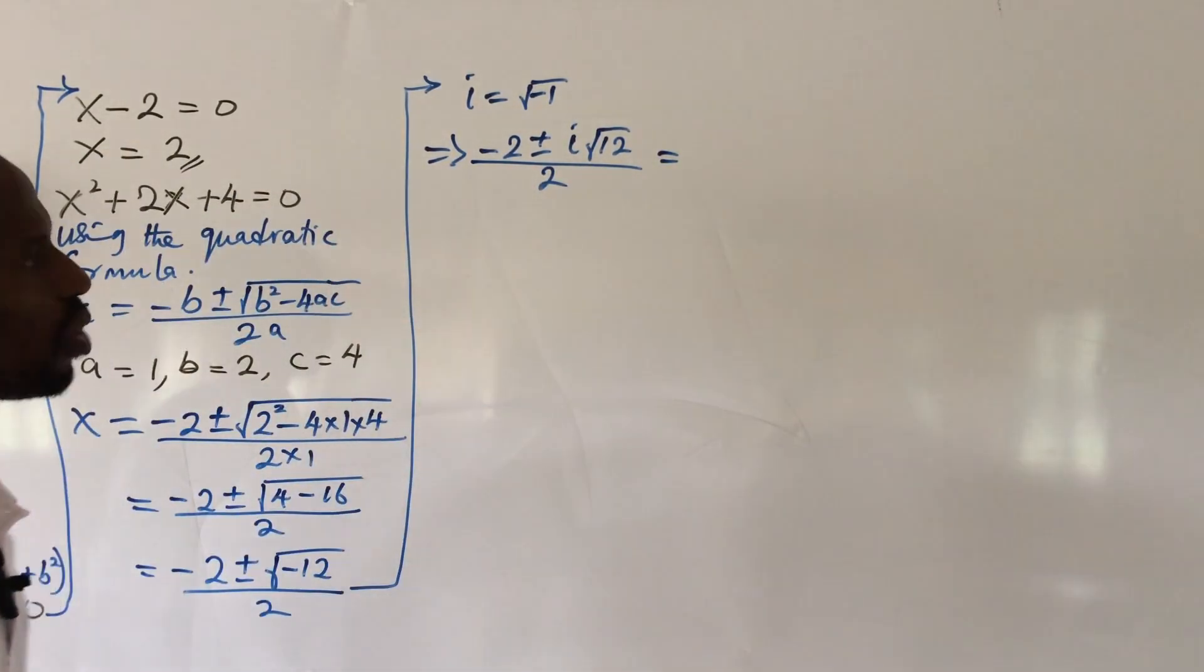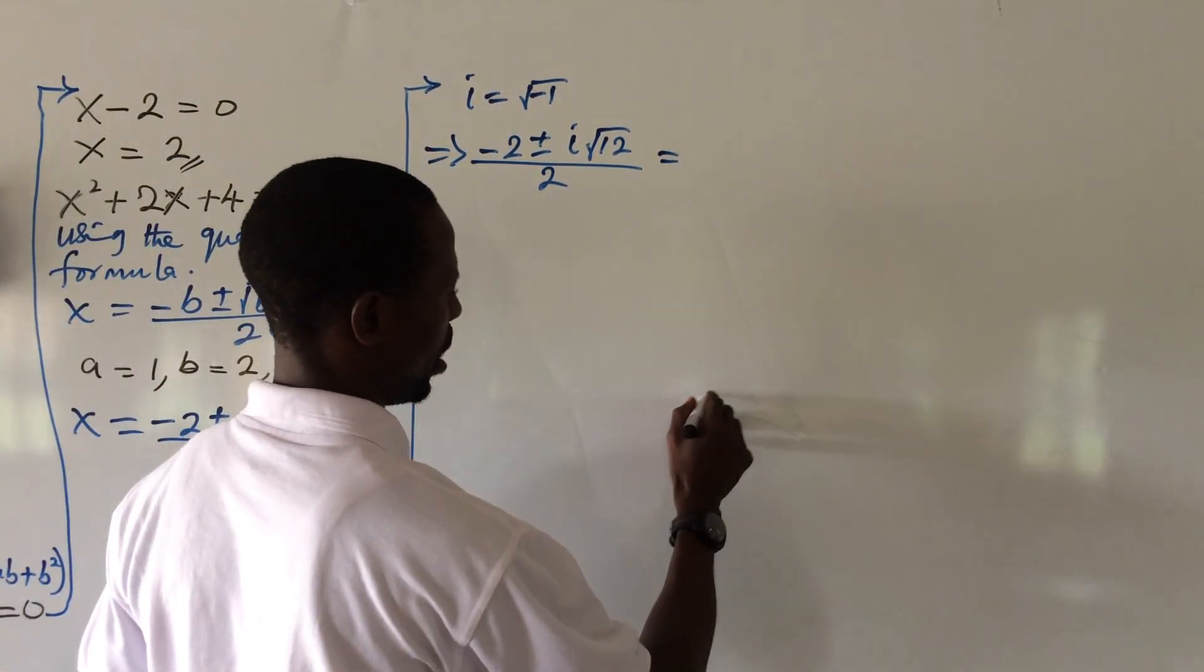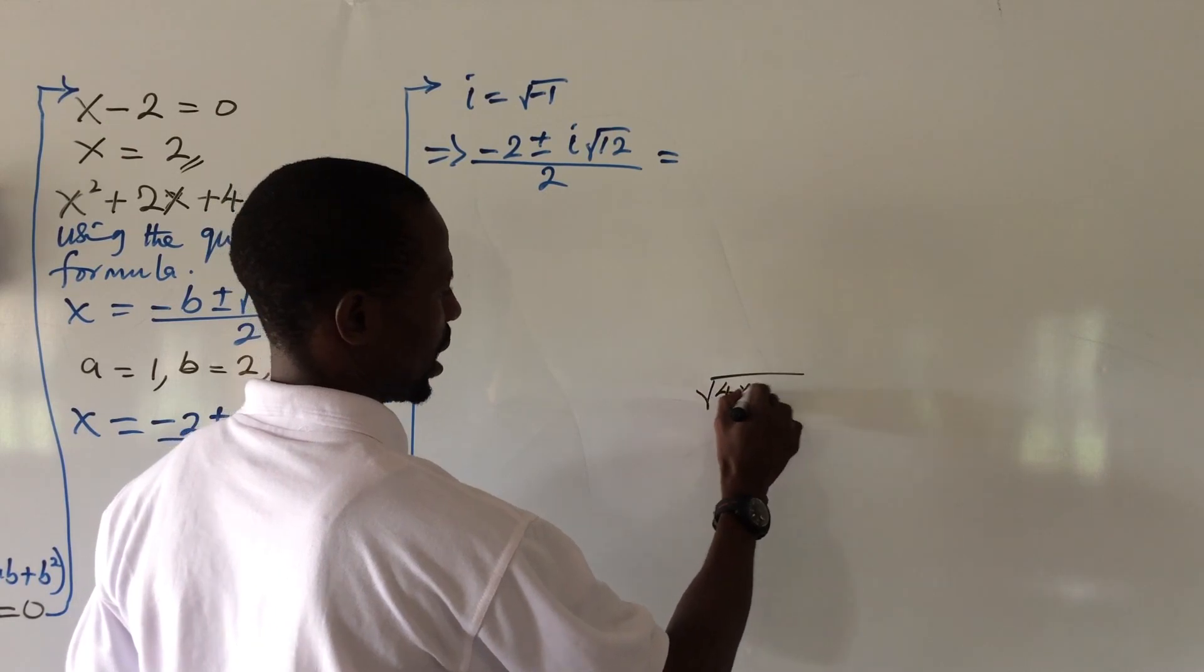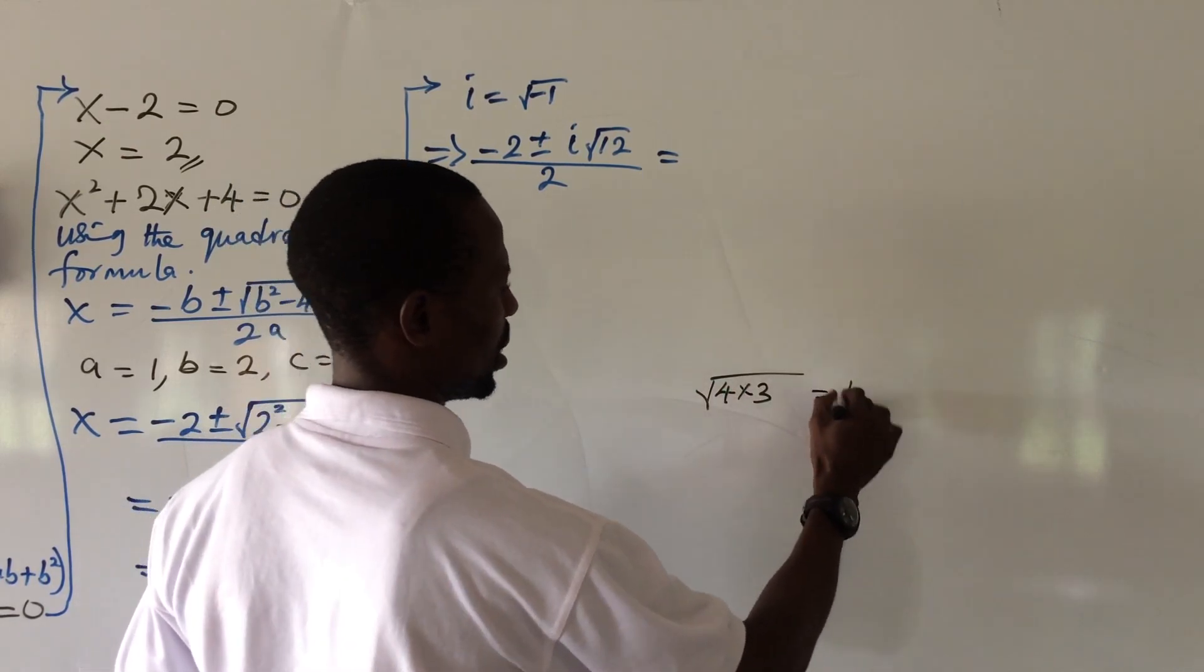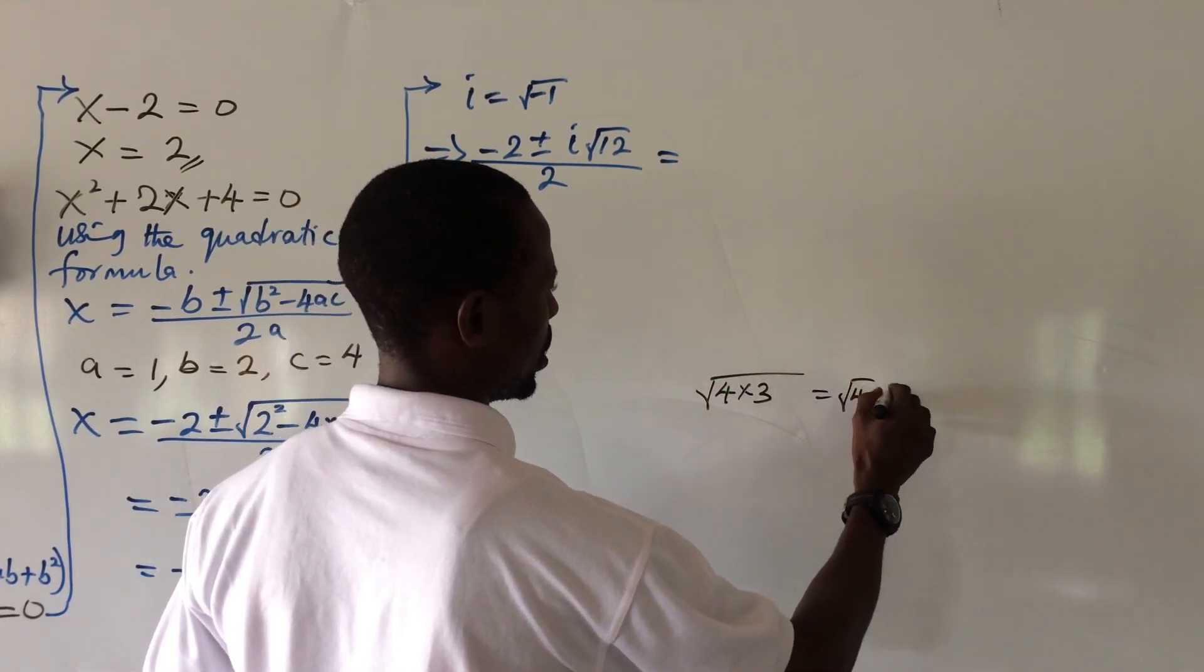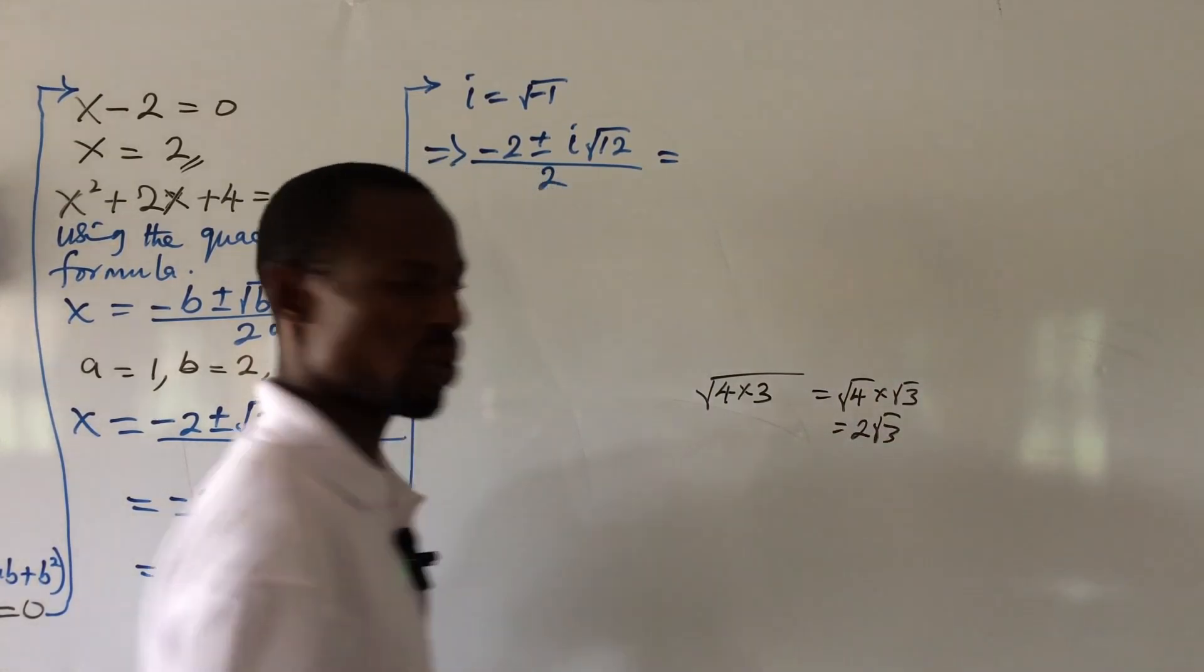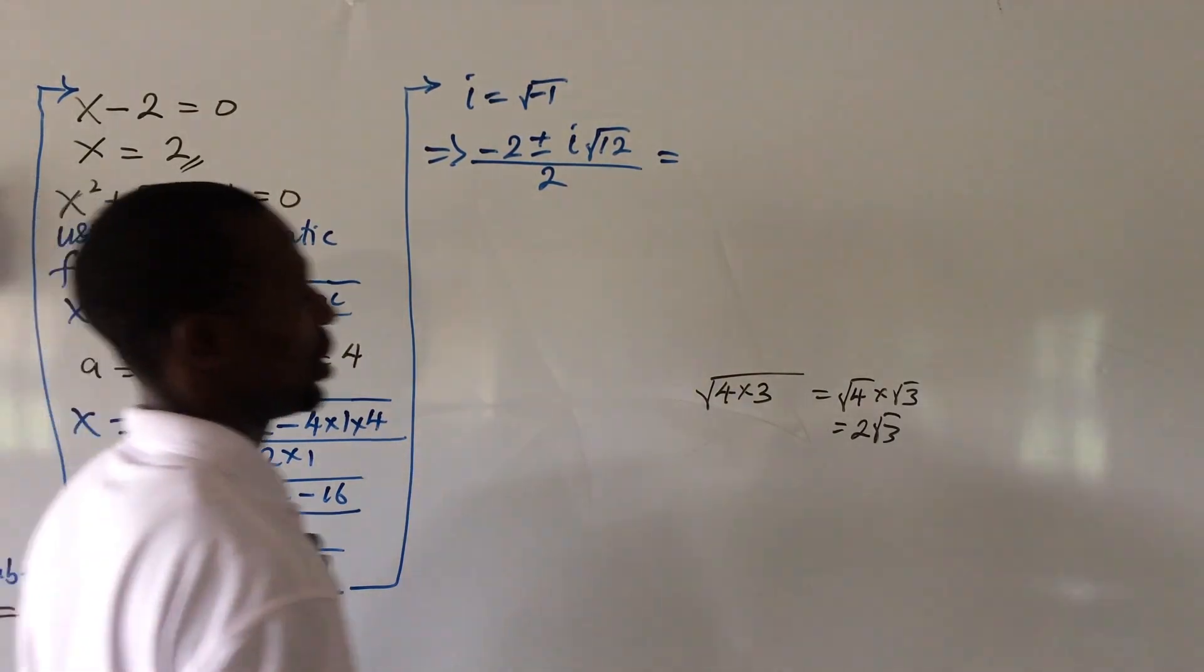So if we bring that here, this expression will now become minus 2 plus minus i root 12 all over 2. And you know root 12 could also be written as 4 times 3, and this is same thing as root 4 times root 3, which is equal to 2 root 3.